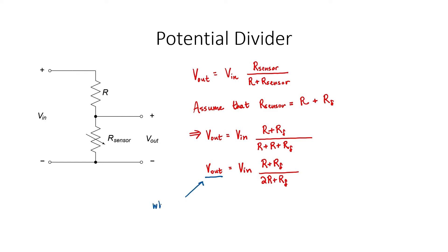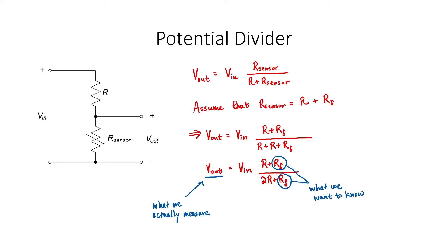What we actually measure in this circuit is the output voltage — we're going to be using a voltmeter to measure that voltage. But that's not what we really want to know; what we really want to know is the value of that resistance. R_delta is the value we'd like to determine. Because this equation relates the output voltage to R_delta, we can definitely use this circuit as a sensor — we just measure the output voltage and then use the equation to determine R_delta.